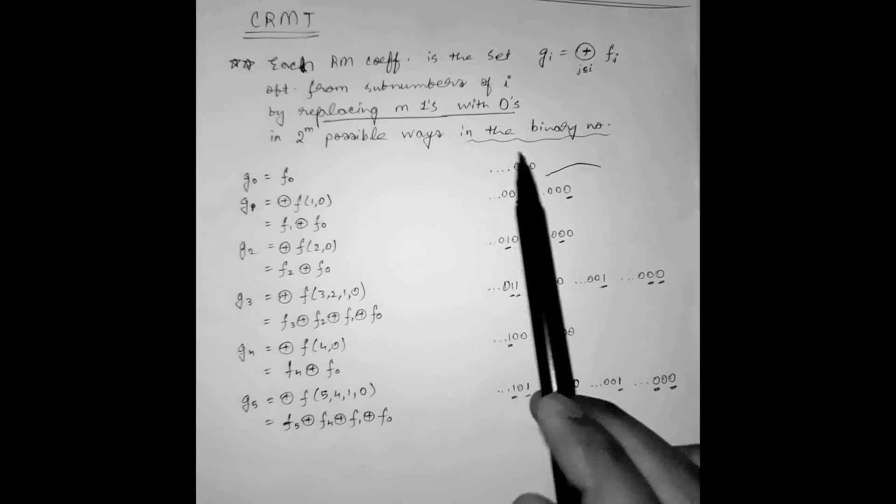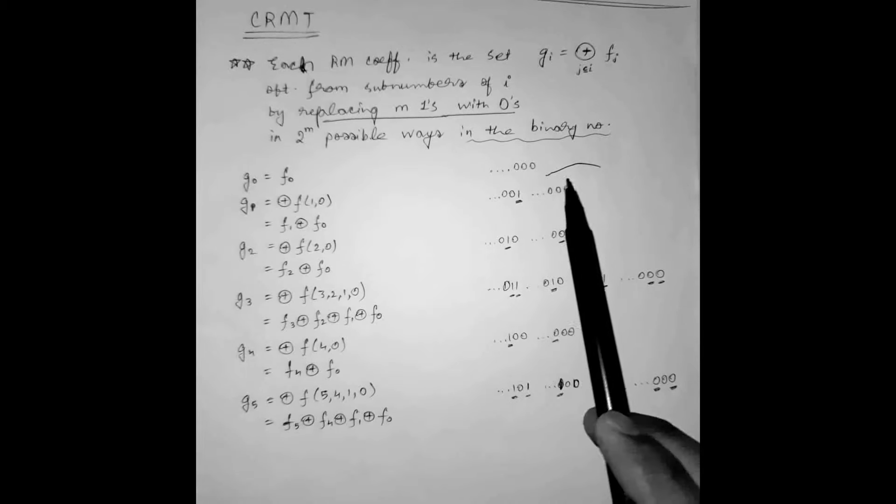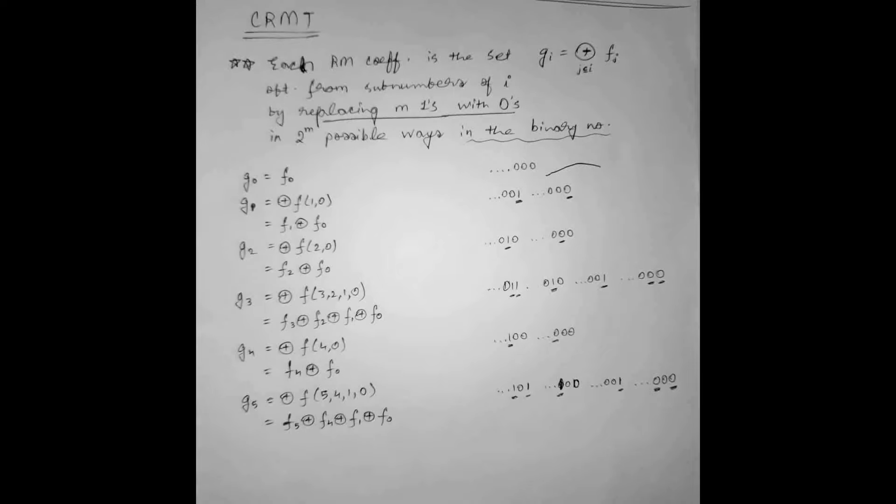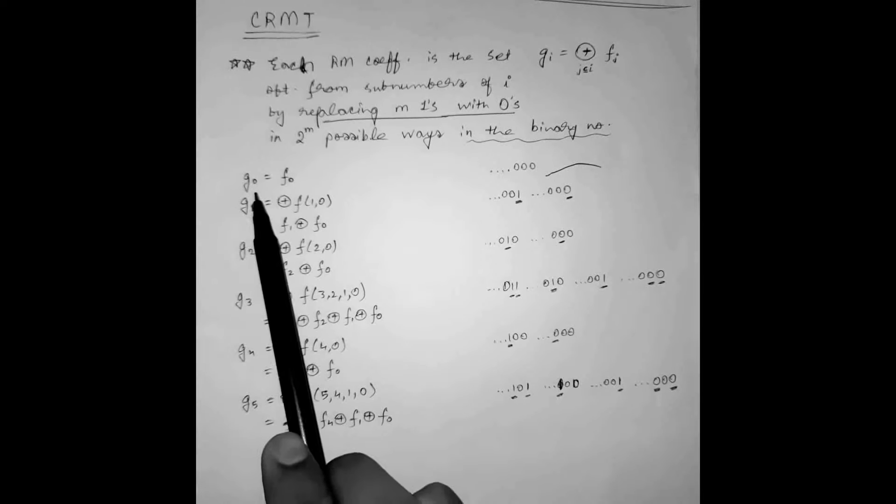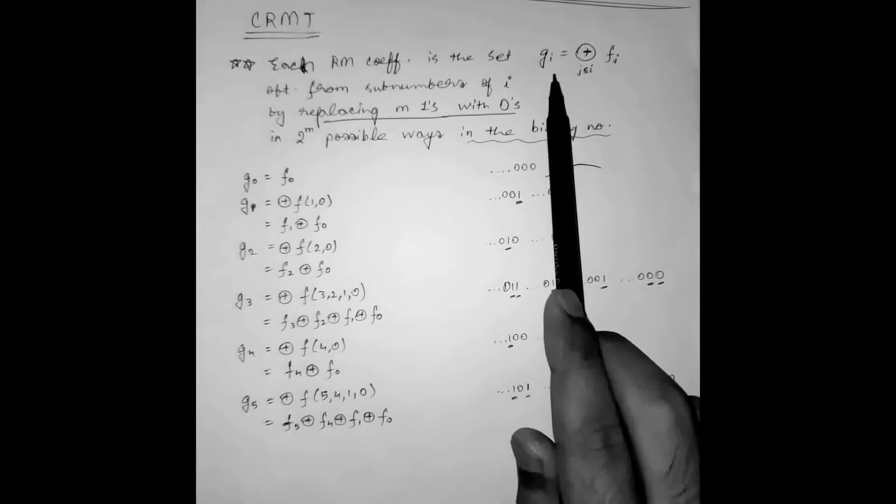sub numbers of I by replacing M ones with zeros in 2 to the power M possible ways in the binary number. Now let us see what this line is trying to say. This is the crux of CRMT. We have to learn how to represent this GI expression.